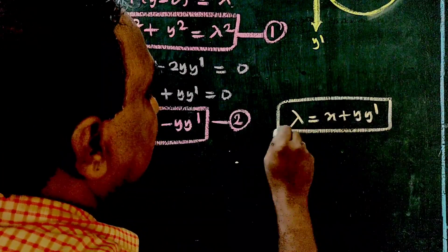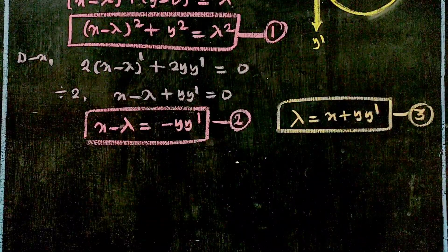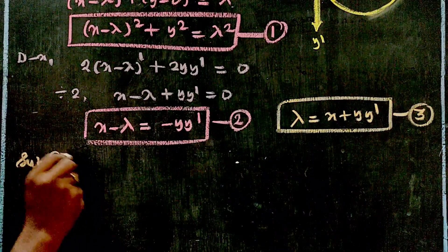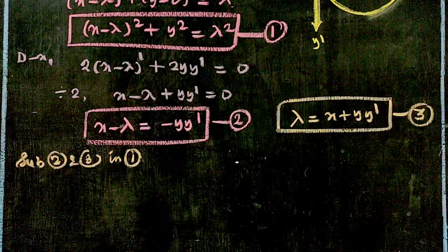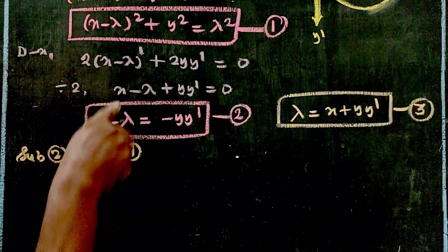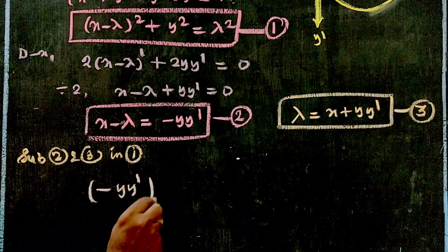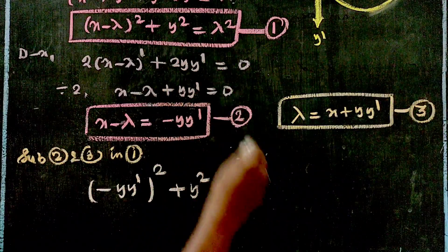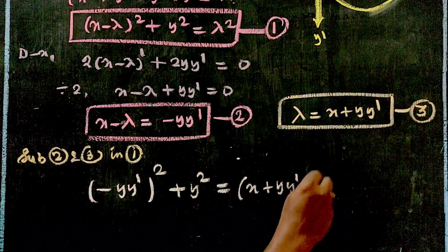This is equation number 3. Equations 2 and 3 express the same thing. Substituting equations 2 and 3 into equation 1, we get: (x - λ)² + y² = λ², which becomes (-y·y')² + y² = (x + y·y')².